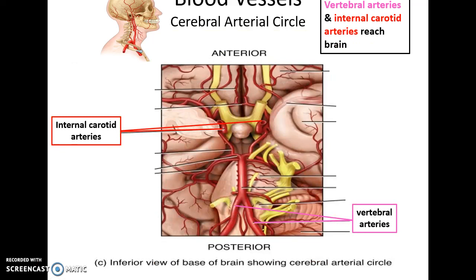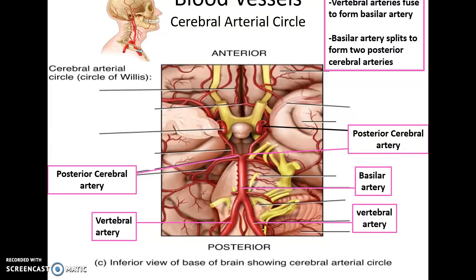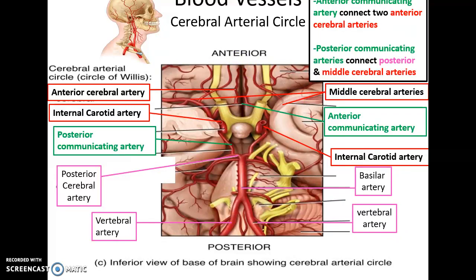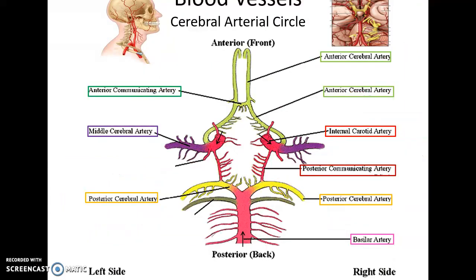Blood heading to the brain travels via either the internal carotid arteries or the vertebral arteries, forming the cerebral arterial circle. The vertebral arteries fuse together to form the basilar artery, which splits into the posterior cerebral arteries. The internal carotid arteries split into the middle and anterior cerebral arteries. An anterior communicating artery connects the two anterior cerebral arteries, and posterior communicating arteries connect the posterior cerebral arteries to the middle cerebral arteries, forming the complete arterial circle to help avoid obstructions in blood flow.